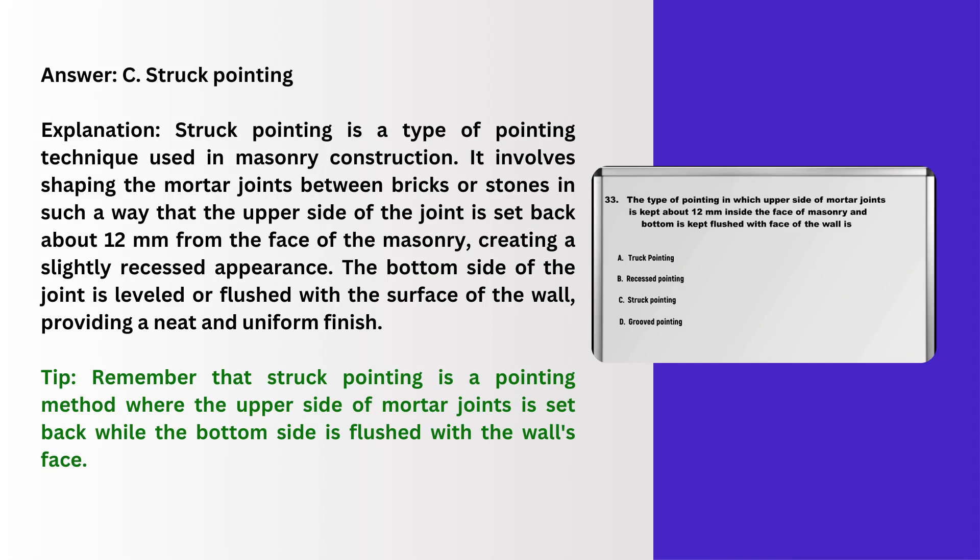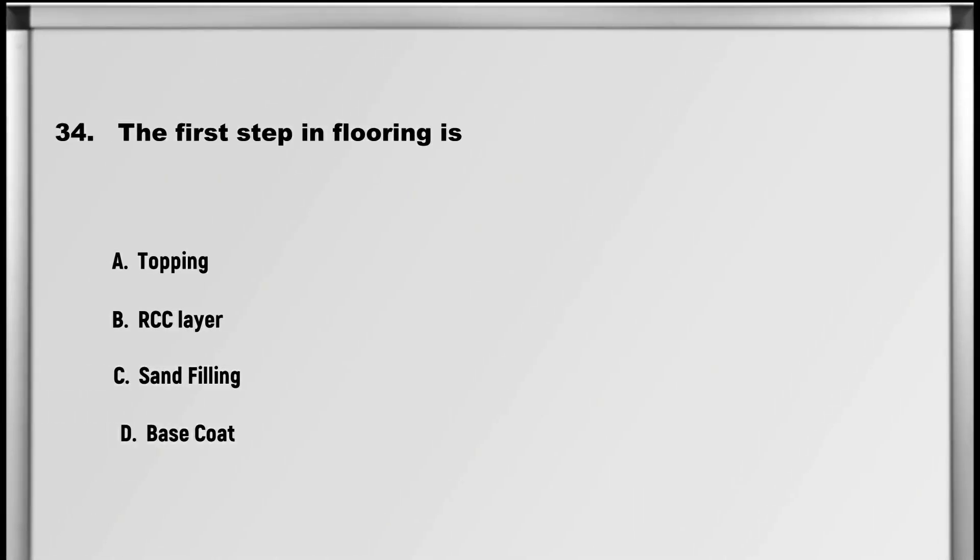Explanation: Struck pointing is a type of pointing technique used in masonry construction. It involves shaping the mortar joints between bricks or stones such that the upper side of the joint is set back about 12 mm from the face of the masonry, creating a slightly recessed appearance. The bottom side of the joint is leveled or flushed with the surface of the wall, providing a neat and uniform finish. Tip: struck pointing is a method where the upper side of mortar joints is set back while the bottom side is flushed with the wall's face.